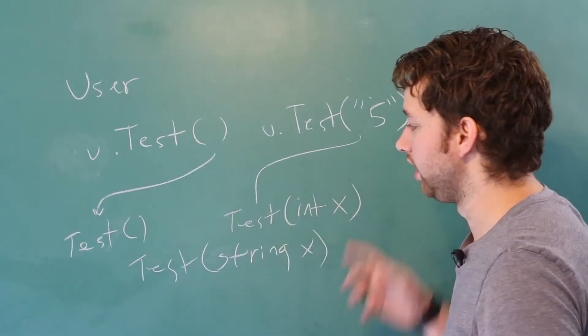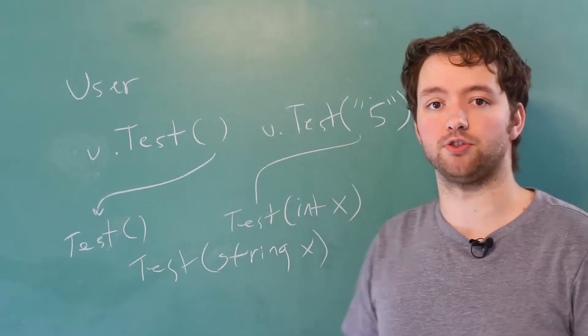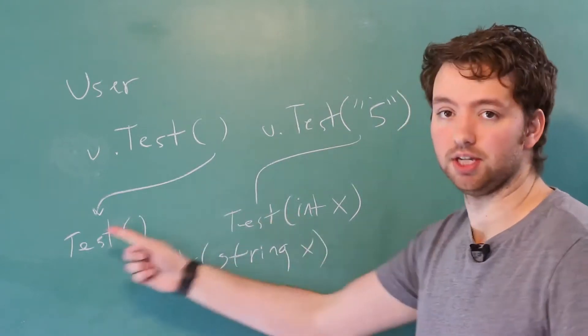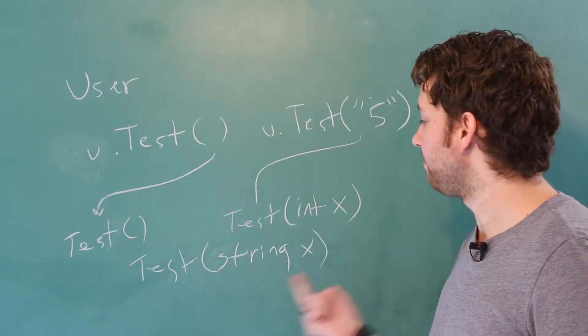Now you can see these all have to be unique. And this is what's known as the method signature. The identifier is all the same in this situation, but the parameters are different.